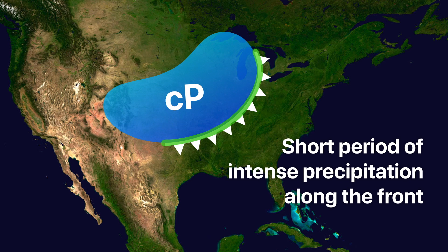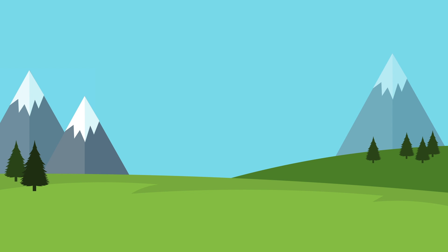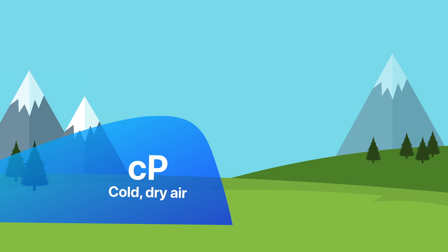But why is that? To understand that, we need to take a closer look at what that CP cold, dry air mass would look like at the surface if we could actually see it. It would look something like this: a heavy, dense, fast-moving freight train of air that moves along the surface rather quickly, driven by global winds. In this diagram, the cold front would be right here, along the leading edge.